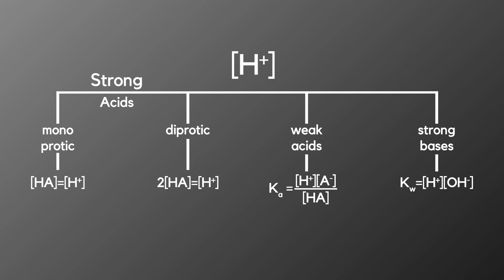Just to quickly review these four different examples for calculating the hydrogen ion concentration: strong monoprotic acids are the easiest, as the hydrogen ion concentration is equal to the concentration of the acid. For strong diprotic acids, the hydrogen ion concentration is equal to twice the concentration of the acid. For weak acids we need to use the Ka expression for acid dissociation, and for strong bases we use the Kw expression to go from a hydroxide ion concentration to a hydrogen ion concentration.